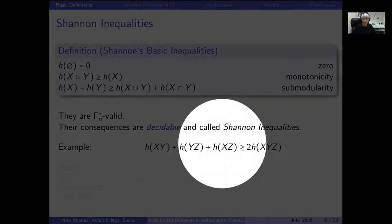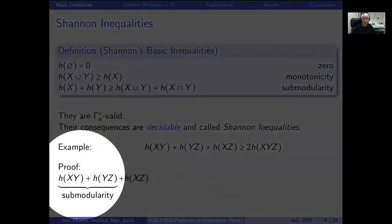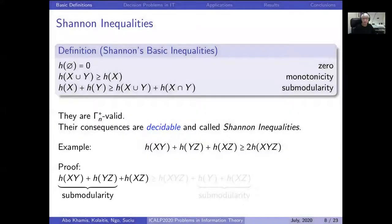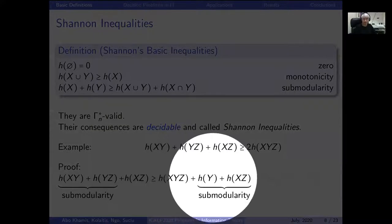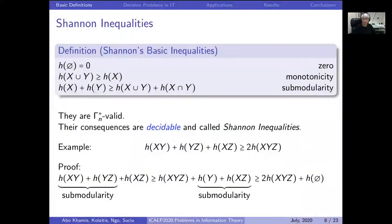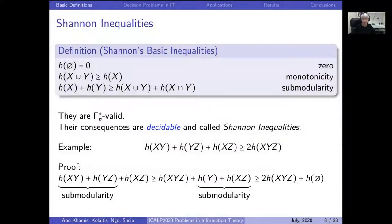Let's prove that a given inequality is a consequence of Shannon's basic inequalities. We start with the term on the left and apply submodularity to the first two terms. This allows us to replace them with two terms consisting of the union of the variables x, y, z and the intersection, which is just y. Then we apply submodularity again to get x, y, z and the empty set, and h of the empty set is zero. So this is a short proof that the inequality is a Shannon inequality.